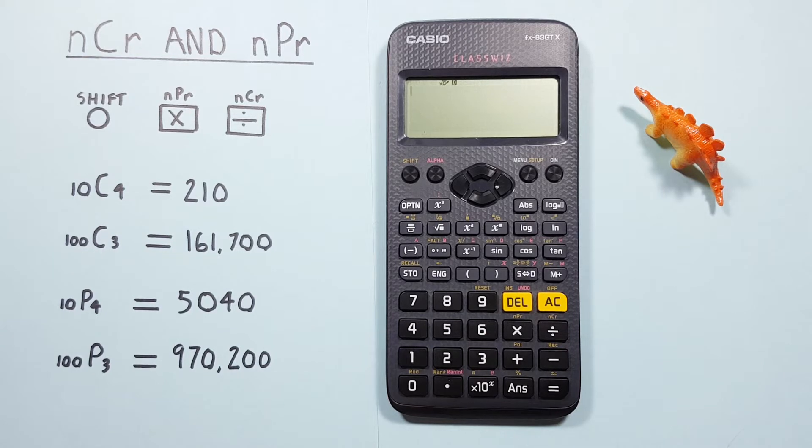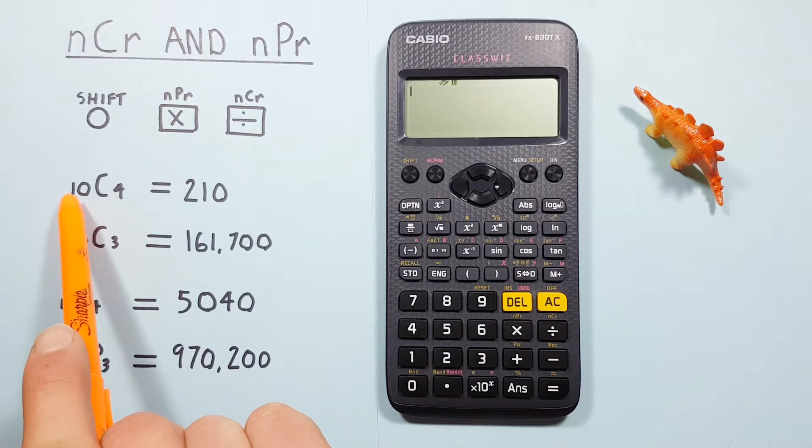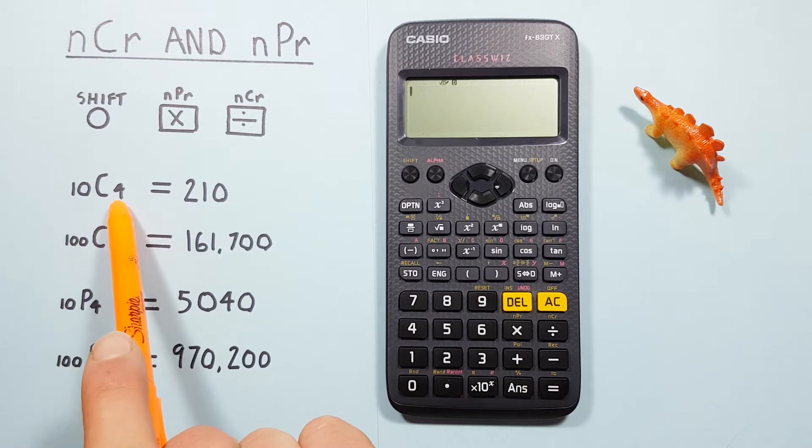We'll start with combinations, where if we want to choose a certain number of items from a set and the order does not matter. Like for example, if we have 10 choose 4 combinations.